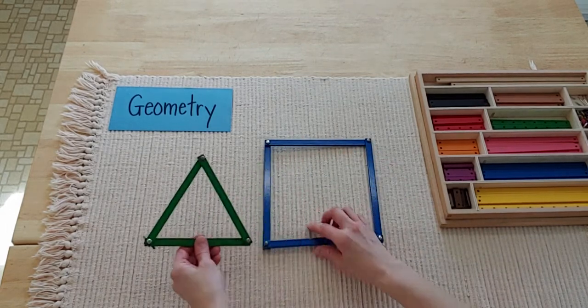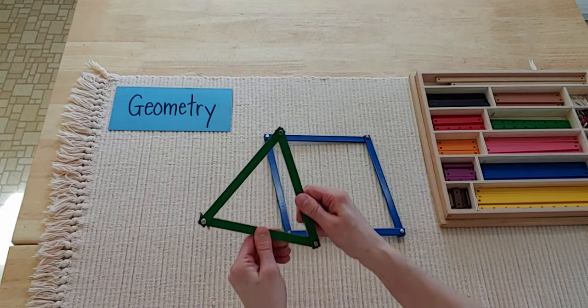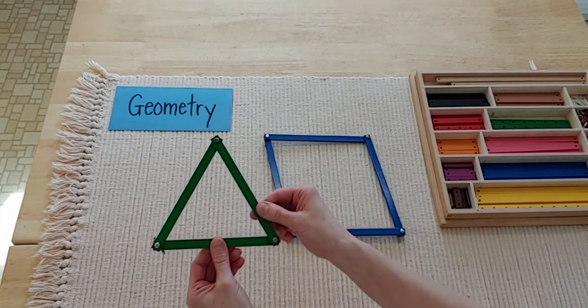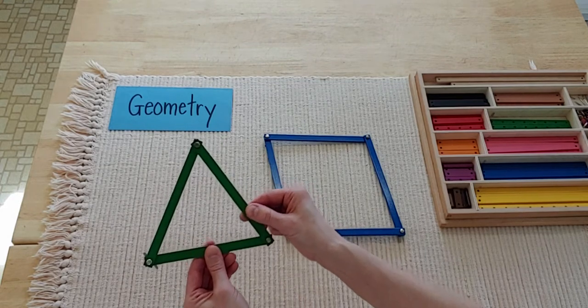I was thinking, wow, this shape is so sturdy. Look, I'm pressing so hard and my triangle is not moving. It's not changing its shape one bit.